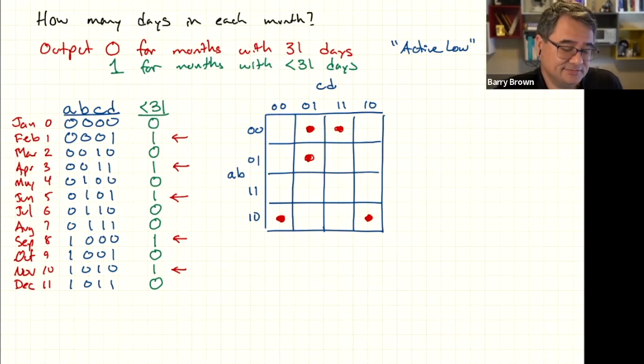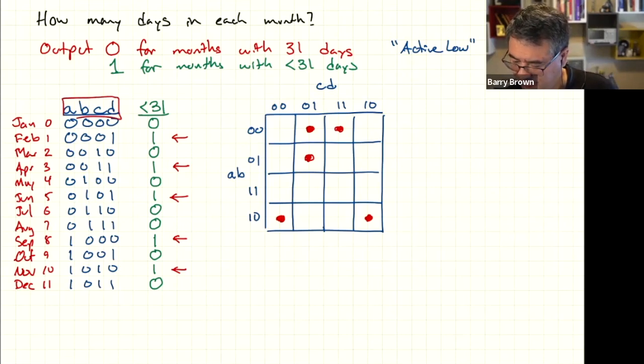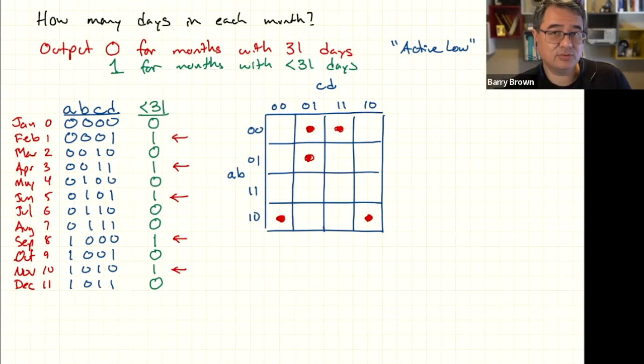But we're actually not done. See, we had four variables as our input, A, B, C, and D, to give us a total of 12 combinations because there's 12 months. But with four binary inputs, we've actually got 16 inputs, 16 possible combinations. We're only using 12 of them. There's four of them that kind of go unused.